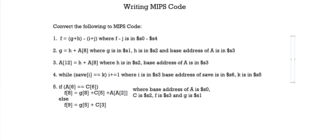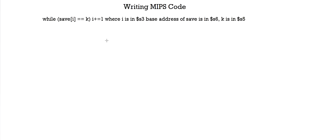Today we're going to get started on number 4 and number 5. As you can see in number 4, the only difference between it and our previous question is that in this portion here — in the save of i — previously we saw that in the offset space there was a number. But here, as you can see, there's a letter.